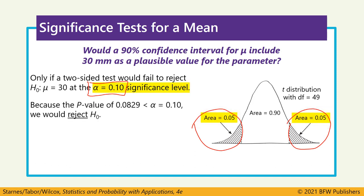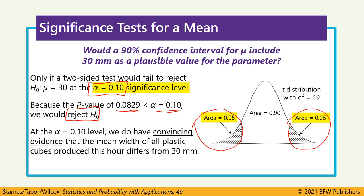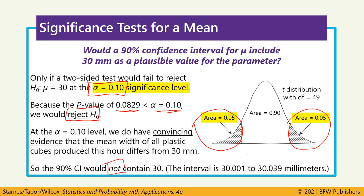Because the p-value is less than 10%, that 0.0829, we would reject that null hypothesis. So at the 10% level, we do have convincing evidence that the mean width of all plastic cubes produced this hour differs from 30 millimeters. A 90% confidence interval would not contain that value of 30. It would probably just miss it. Maybe it would go from 30.001 to 30.039. But the point being that 30 is not going to be in a 90% confidence interval because we are rejecting the null hypothesis since that p-value is less than the alpha level.